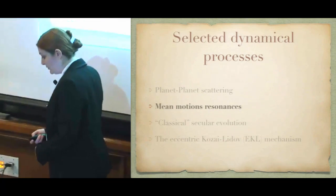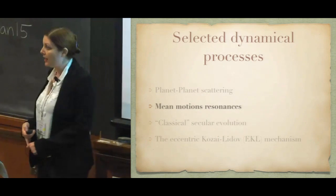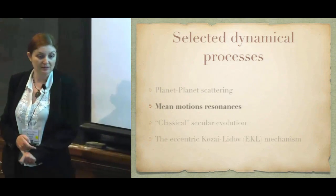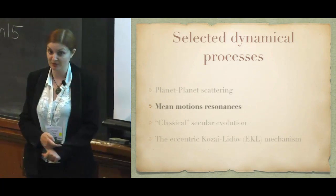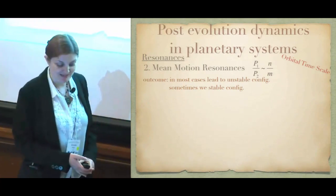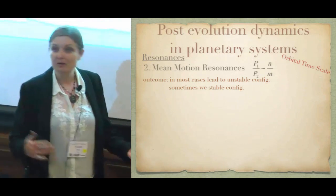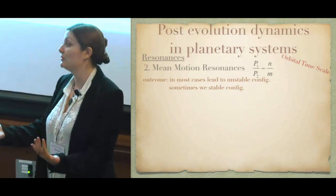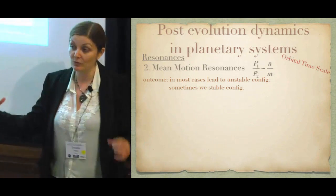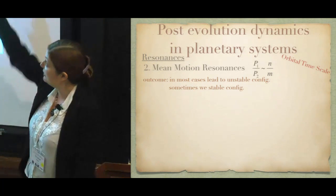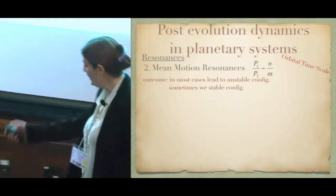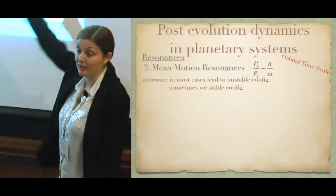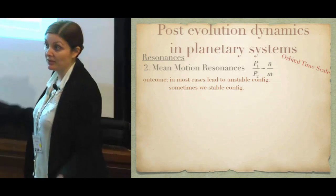Another interesting feature observed in planetary architectures is mean motion resonances. Resonances occur when you have at least two natural frequencies in your system matching one another up to some ratio. If the periods of two orbits are close such that P1/P2 ≈ n/m where n and m are small integers, they are in mean motion resonance. We see this a lot in our own solar system.